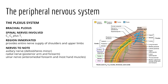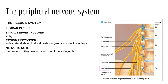The lumbar plexus arises from spinal nerves L1 through L4 and innervates the anterolateral thigh, abdominal wall, and some external genitalia. The femoral nerve is a major nerve from this plexus, innervating the quadriceps—rectus femoris, vastus lateralis, vastus medialis, and vastus intermedius—for knee extension, as well as the sartorius for hip flexion and abduction.